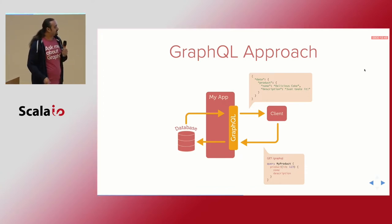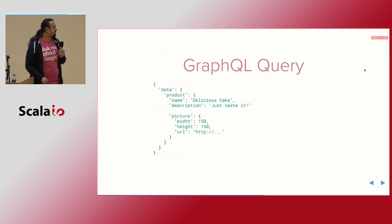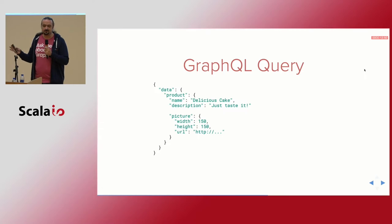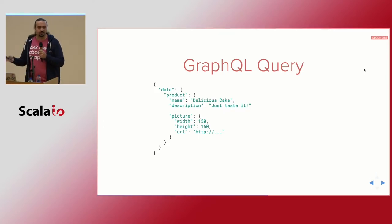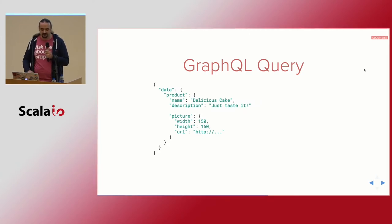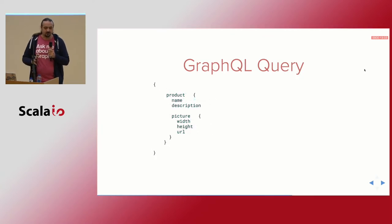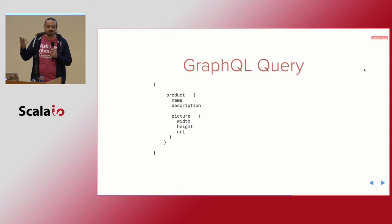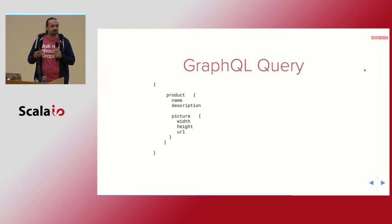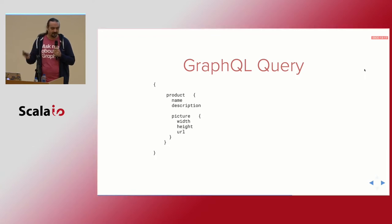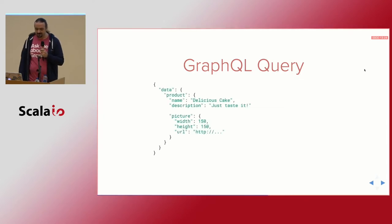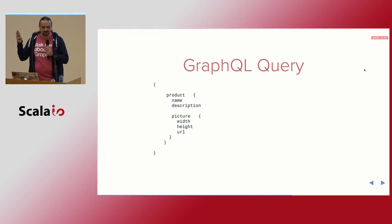Another way to think about a GraphQL query: imagine what kind of JSON you would like to get from the server. Once you've imagined it, you create a GraphQL query by dropping all the values — because as a client you know which fields you want, but you don't have the values; those are stored on the server. So you just describe only the keys in this nested structure. This is actually a valid GraphQL query that you can execute.